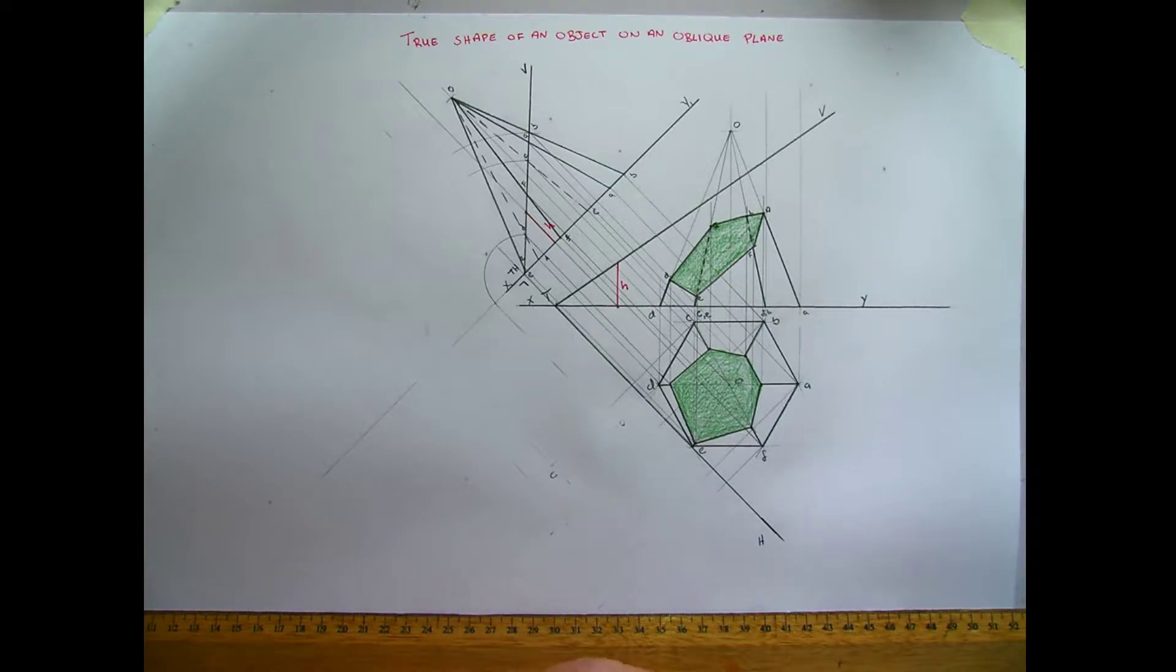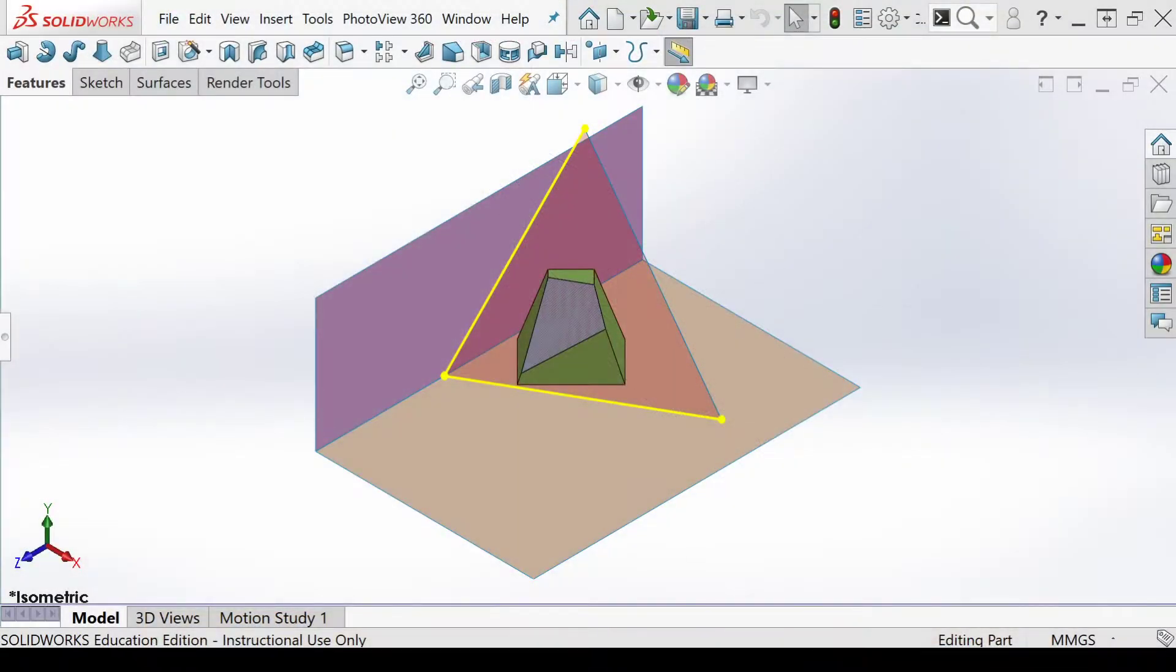And what we're going to do now is find what the true shape of that looks like when it has been cut by the surface. So if we were to look at our SOLIDWORKS model there just for a moment, that grey surface there, that's what the object looks like after it's been cut.